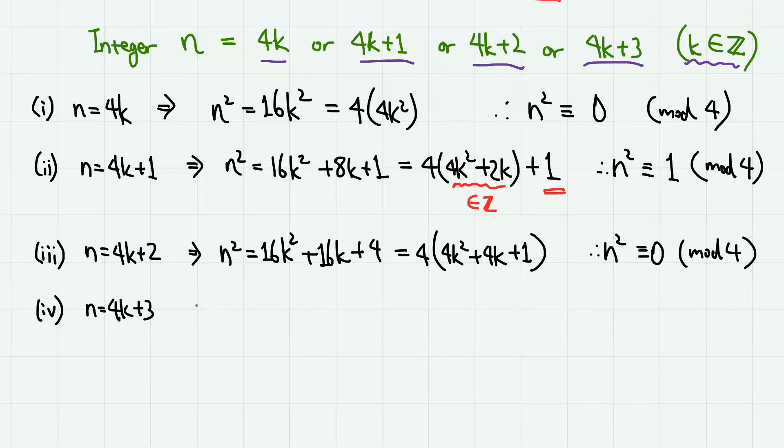And lastly, when n = 4k+3, then n² = 16k² + 24k + 9. So we have 4 times (4k² + 6k + 2) + 1. So in this case, we have the remainder 1.